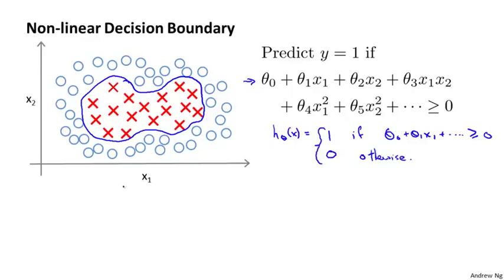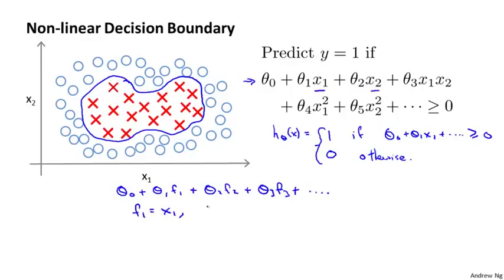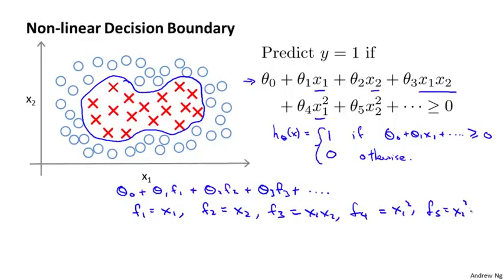Another way of writing this, to introduce a little bit of new notation that I'll use later, is that we can think of a hypothesis as computing a decision boundary using theta zero plus theta one f one plus theta two f two plus theta three f three and so on. Where I'm going to use this new notation f one, f two, f three to denote these new features that I'm computing. So f one is just equal to x one, f two is equal to x two, f three is x one times x two, f four is x one squared, f five is x two squared, and so on.